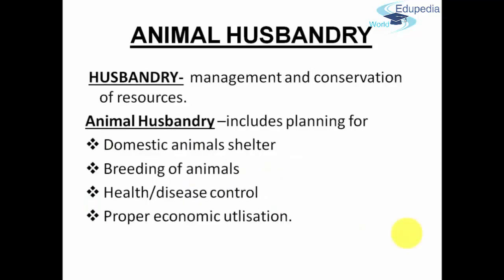Now what do we mean by husbandry? Husbandry means the management and conservation of resources. These resources are related to animals — their care, their protection, their wellbeing. If we manage and conserve these resources properly, this comes under animal husbandry. The branch of science that deals with the management and conservation of these resources is what is known as animal husbandry.